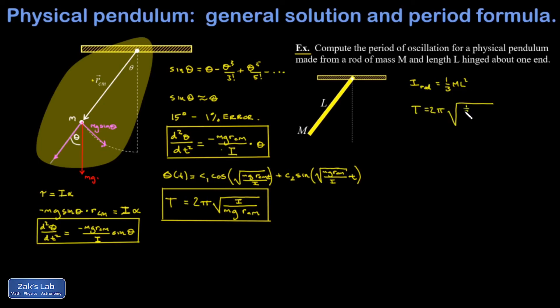And I get one-third mL squared divided by m times g times this r center of mass term. So I need the distance from the rotation axis to the center of mass of the rod. And the center of mass of the rod is easy to find by symmetry. It's just L over 2.